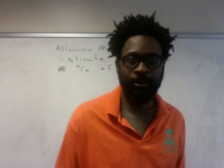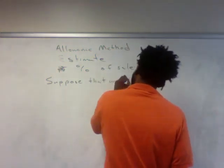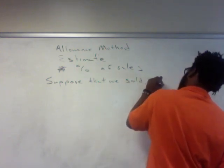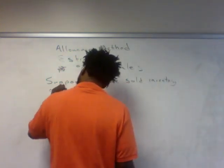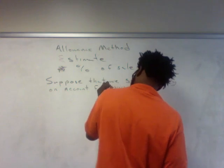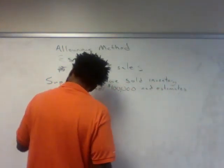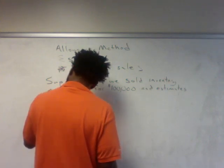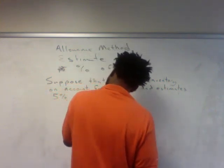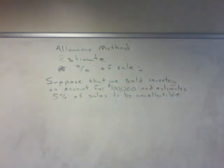Whatever that number is, it goes directly into your estimate journal entry. So let's look at an example. Suppose that we sold inventory on account for $100,000 and estimate 5% of sales to be uncollectible.